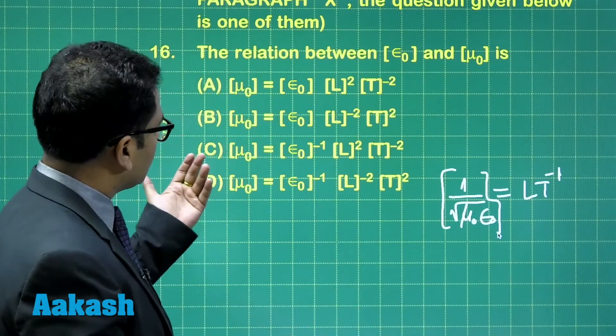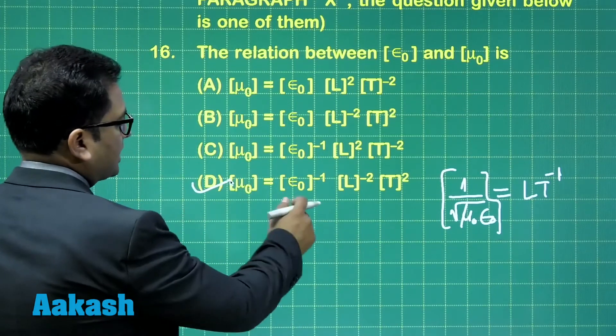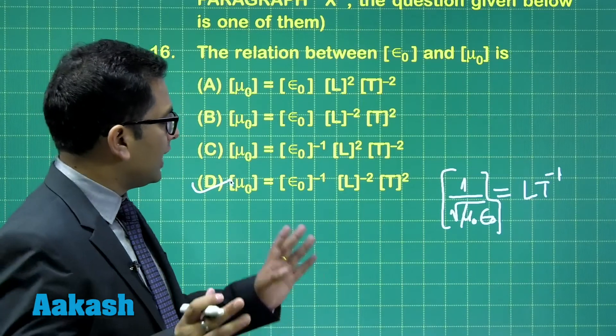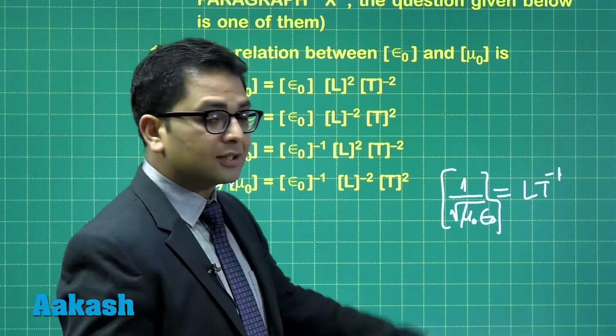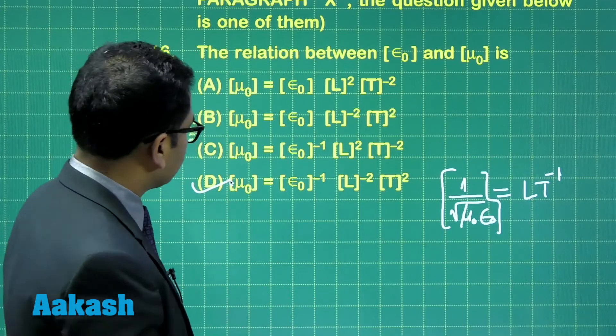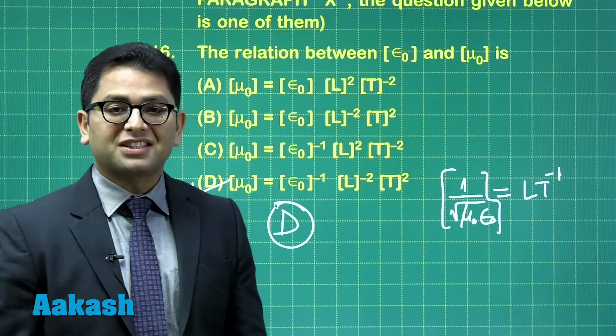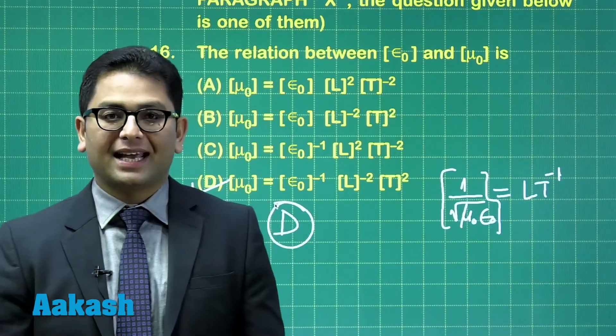you need to relate this, mu_0. Straightforward: mu_0 would be epsilon_0^(-1) L^(-1)t^2. There is no difficulty in concluding this part. So for question number 16, the correct option is option number D. Alright, let's go to the second paragraph, which comprises of question number 17 and 18.